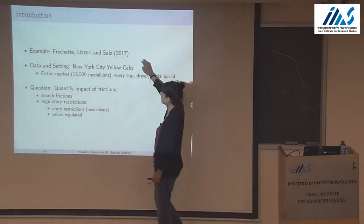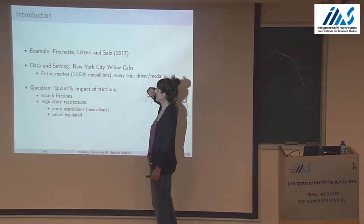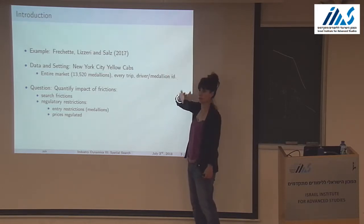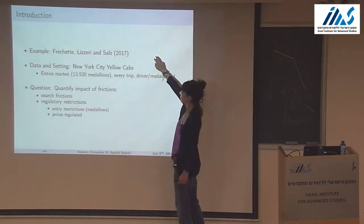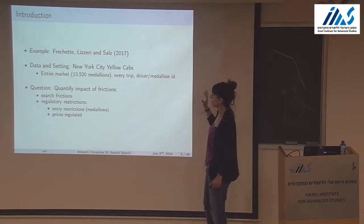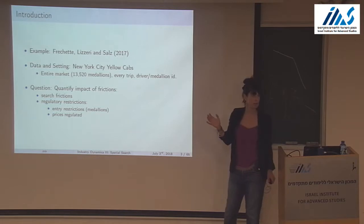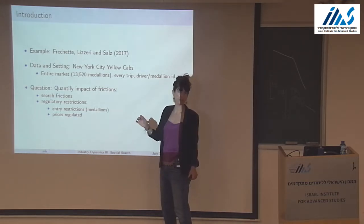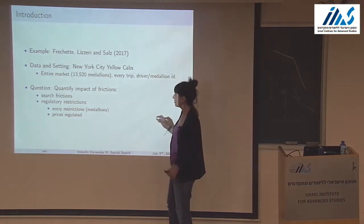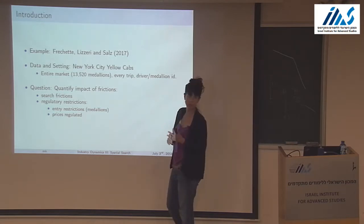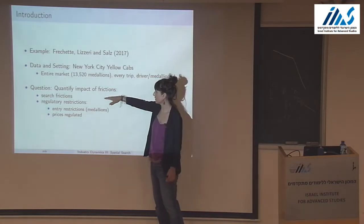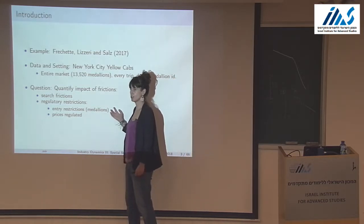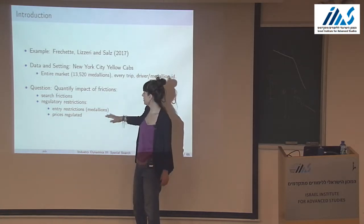To give one example: there's a cool paper on New York City yellow cabs, with a sister paper by Nick Buchholz more tightly linked to what I'll discuss next. They observe the entire market of about 14,000 taxi cabs in New York — basically every trip ever made, with origin, destination, driver, and cab information. Their questions focus on search frictions and regulatory restrictions, most importantly entry restrictions through medallions and regulated prices.